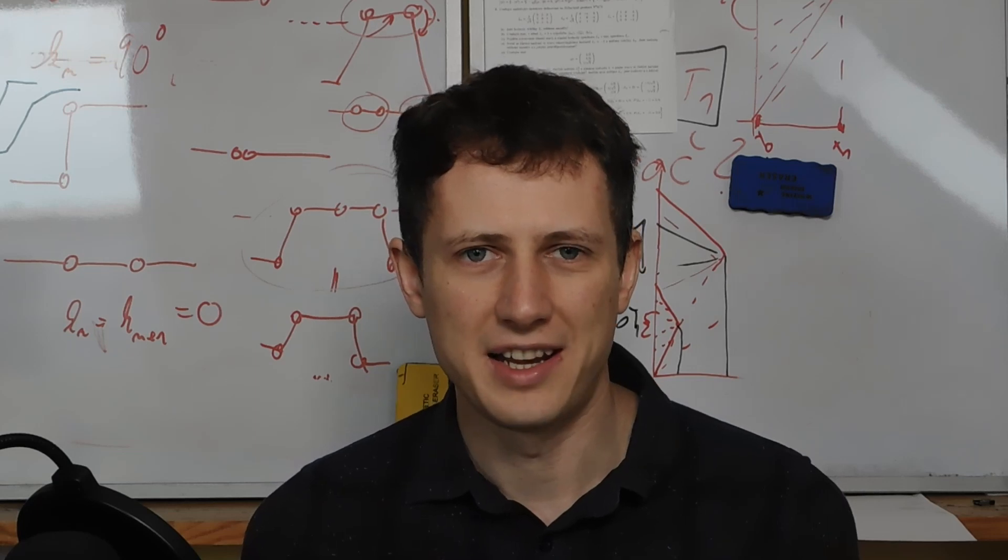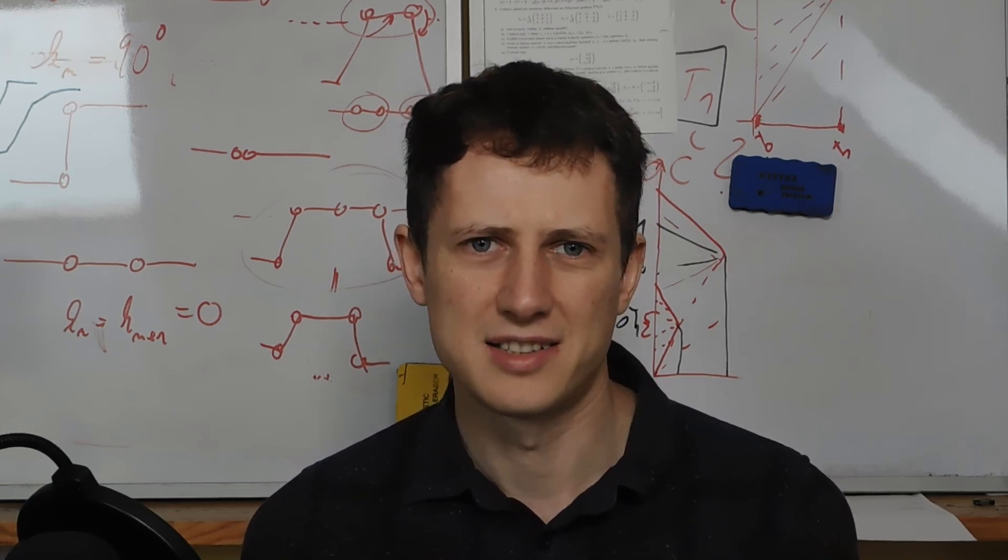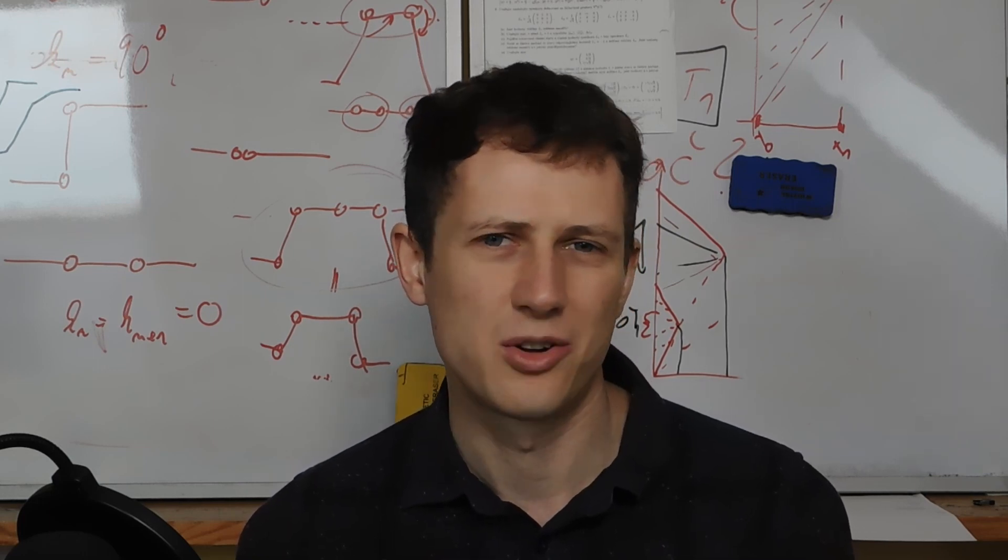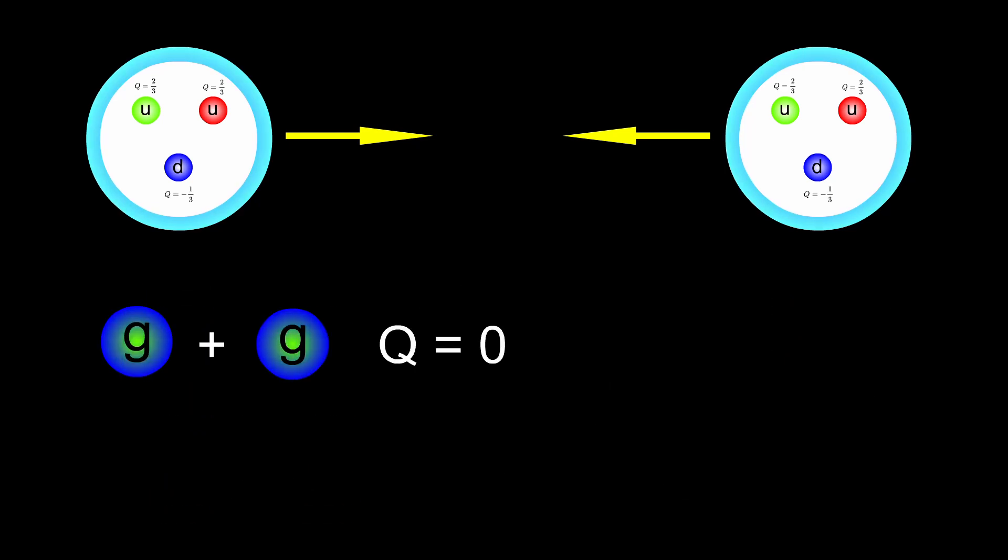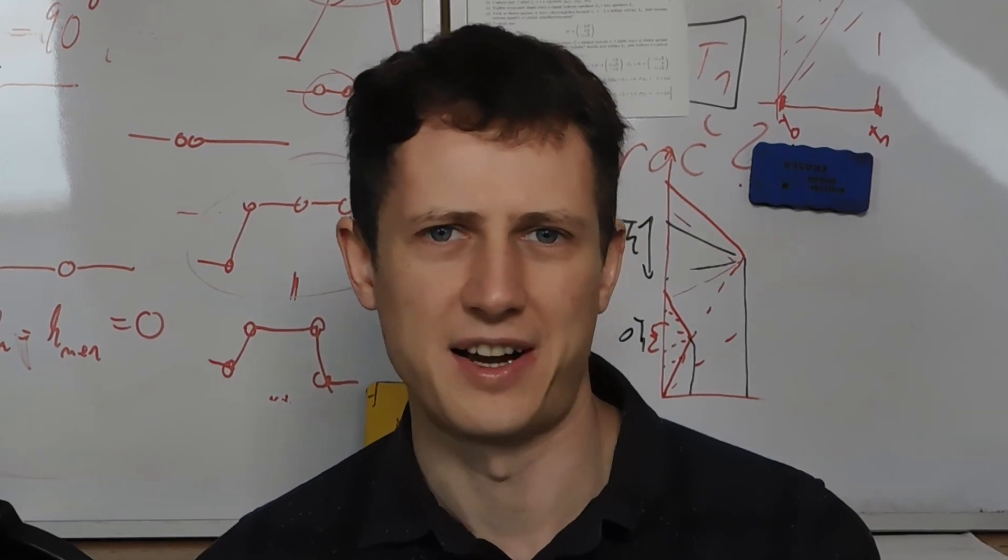So how could physicists create any Higgs boson or Z boson, or any particle that has integer electric charge at LHC colliding protons? You might say that we are not colliding quarks, but gluons, since we know that gluons have zero charge. And therefore, the charge conservation law would be satisfied, right?